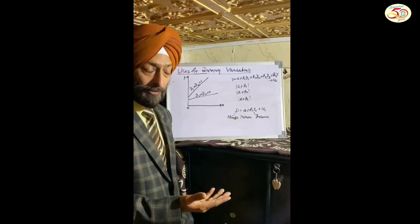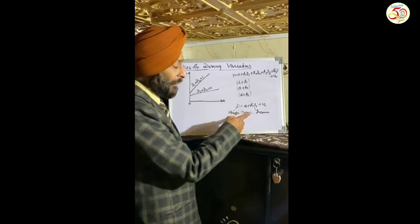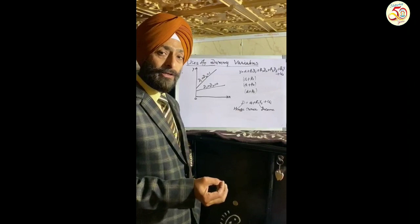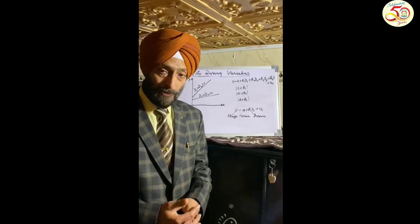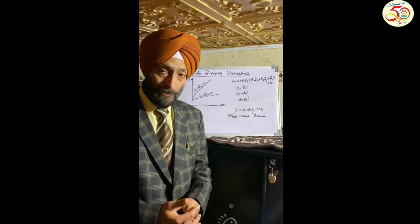Last but not least, sometimes the dummy variable can be the dependent variable. For example, whether a person is a house owner depends upon income level. Income is independent and determines whether a person owns a house or lives on rent. There are many other uses of dummy variable in terms of qualitative and quantitative interpretation. This was the main overview of the uses of dummy variable in research. A detailed note on dummy variables, their uses, and the dummy trap will be posted on the WhatsApp group. Thank you.